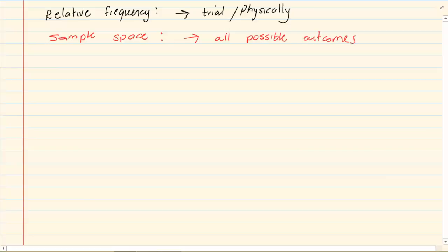Now when I say all possible outcomes, let's say you're going to throw a dice. So the sample space is one, two, three, four, five, six.